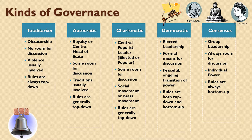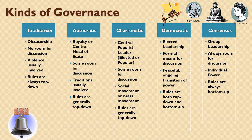Rules are a big part of having governance — they are the ways in which people know what to do. Totalitarian governance is always top-down. Rules are very often made in secret meetings, and many times people don't know they've broken the rules until they are arrested or punished in some way.